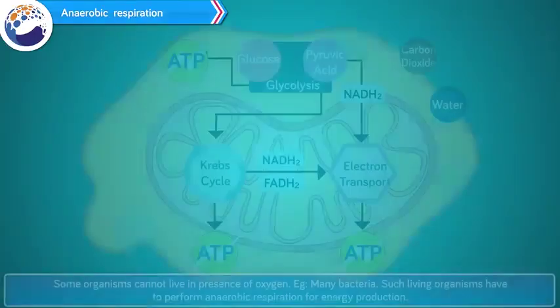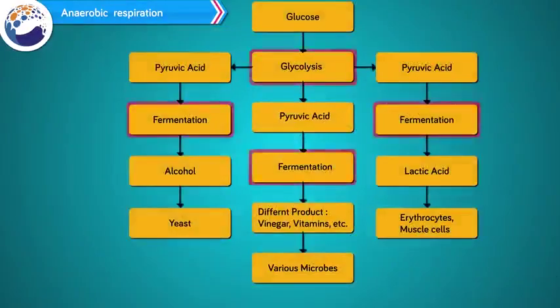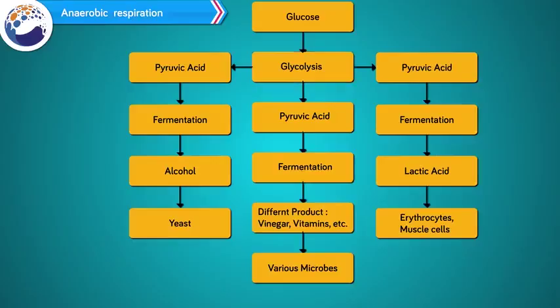Anaerobic respiration: some organisms cannot live in the presence of oxygen — for example, many bacteria. Such living organisms perform anaerobic respiration for energy production. Glycolysis and fermentation are two steps of anaerobic respiration. Pyruvic acid produced through glycolysis is converted into other organic acids or alcohol with the help of some enzymes in this process.